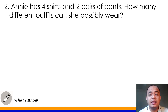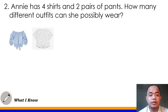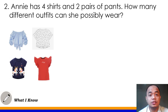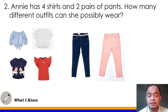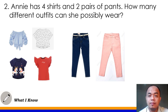Let's have number 2. Annie has 4 shirts and 2 pairs of pants. How many different outfits can she possibly wear? So meron siyang ibat-ibang shirts si Annie — 4 na ibat-ibang shirts, and meron siyang dalawang pares na pants. Ilan yung mga possible outfits na pwedeng maisuot ni Annie gamit yung mga given outfits? We will use the tree diagram para ma-solve natin yung problem na ito.